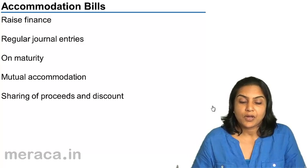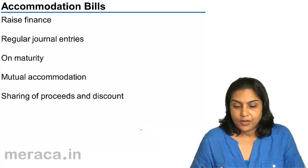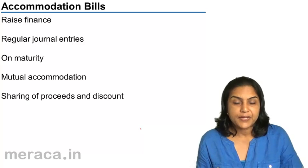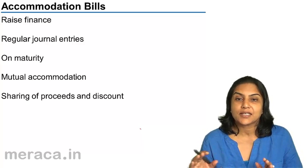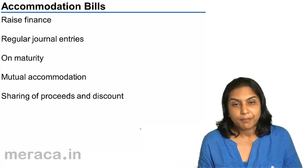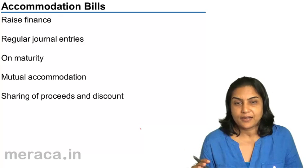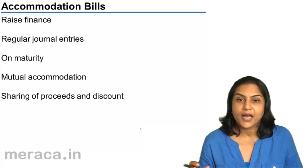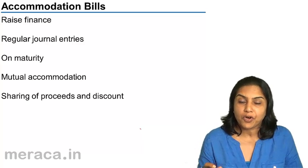Next, let us move on to accommodation bills. The kinds of bills we have considered so far are bills used to facilitate trade. When X sells goods, X makes a bill accepted by Y so that the debt — the money Y owes to X — can be paid after three months through the bill of exchange. It facilitates trade and is proof of actual debt.